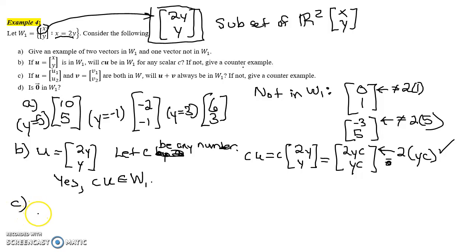Part c. If u and v are both in W₁, I would write this as: if u is in W₁, then u has the form [2u₂, u₂]. The first component has to be 2 times the second component. Similar thing with v here. If we're calling the second component v₂, then the first component v₁ has to equal 2 times v₂. So I'm going to write it in that form [2v₂, v₂]. That helps simplify things a bit.